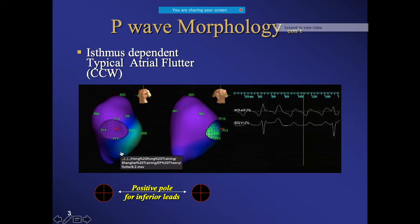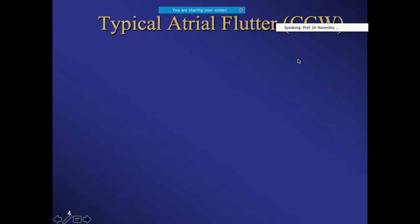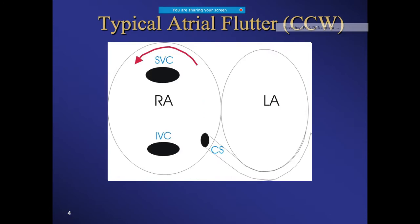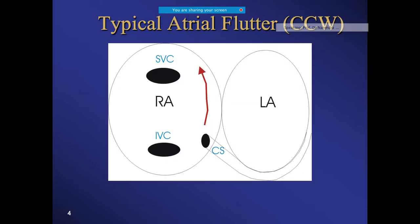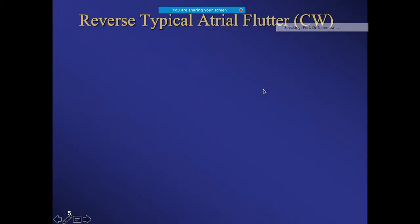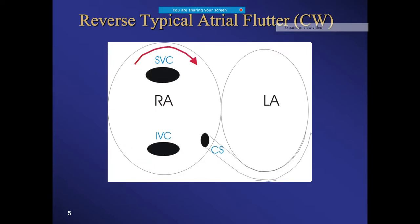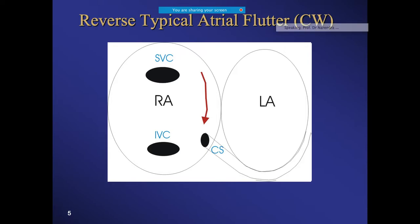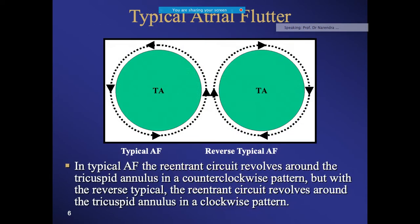Three-dimensional mapping helps us visualize ECGs and understand flutter circuits. In the counterclockwise - or typical - flutter, the wavefront moves against the clock. In this animation, you can see it going counterclockwise around the right atrium, past the superior vena cava, inferior vena cava, and left atrium. The clockwise direction is called the reverse typical or atypical flutter.